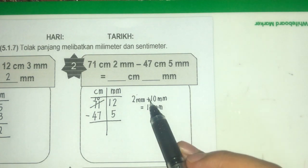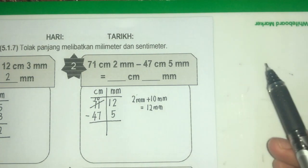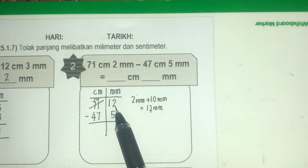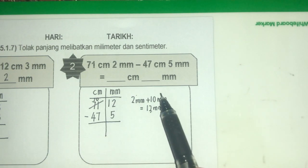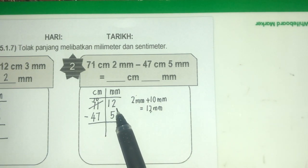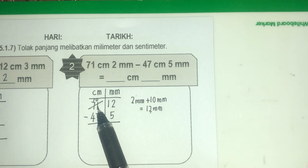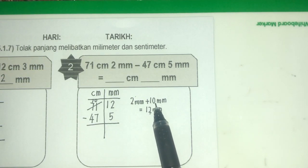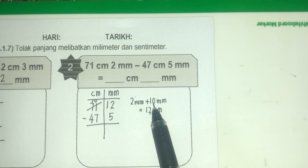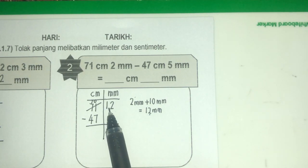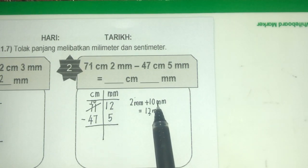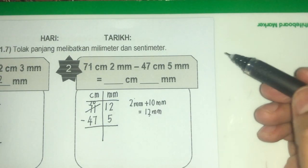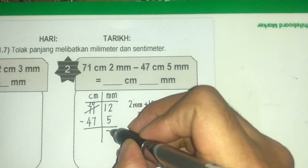Bermaksud 10 tambah 2 iaitu 12 mm. Sekarang daripada tadi 2 mm sahaja, sekarang kita dah boleh tolak. Sebab kita dah pinjam daripada cm ni 1 cm — 1 cm yang kita pinjam tu, kita tukar jadi 10 mm, dan ditambah dengan yang mula-mula 2. Jadi 10 tambah 2, dapat 12. Baru kita tolak macam biasa. 12 tolak 5, dapat 7.